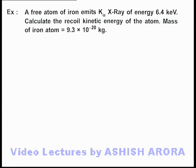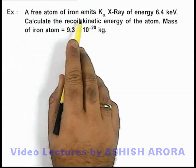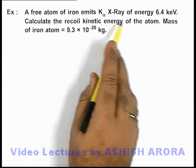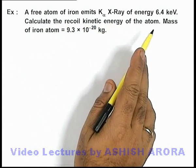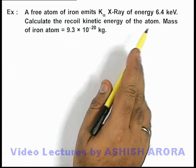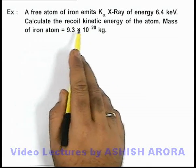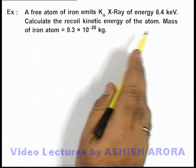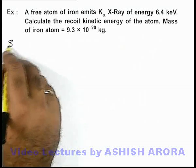In this example, we are given that a free atom of iron emits K-alpha X-ray of energy 6.4 kiloelectron volts. We are required to calculate the recoil kinetic energy of the atom, and the mass of the iron atom is also given.